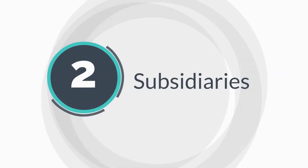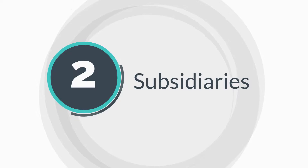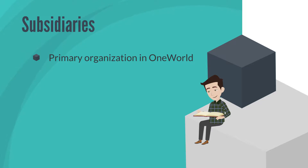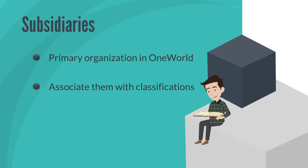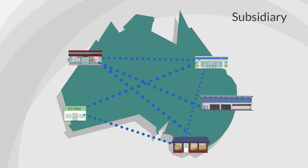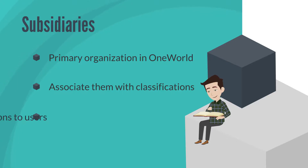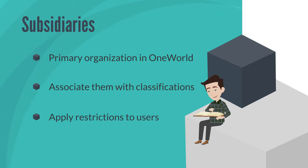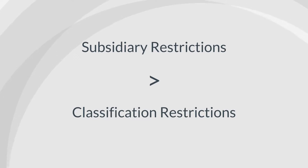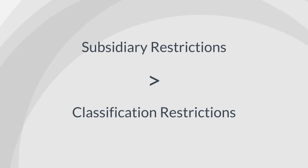So where do subsidiaries come in? Subsidiaries are a broader way to organize information. One key thing to note is that they are the primary means of organization for companies that use OneWorld. You can associate specific classifications with subsidiaries. As with the three classifications, you have the option to apply subsidiary restrictions to different users. In the overall hierarchy of information access, however, subsidiary restrictions trump classifications. In other words, if a user is associated with a specific subsidiary, then any restrictions on that subsidiary automatically apply to that user, even if other users in the parent company with the same role would normally not have those restrictions.